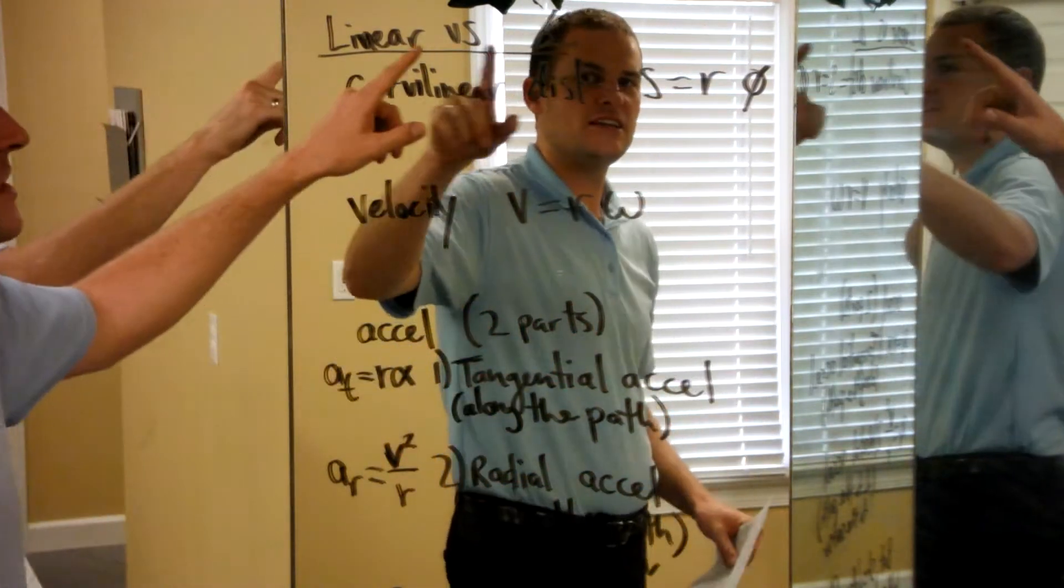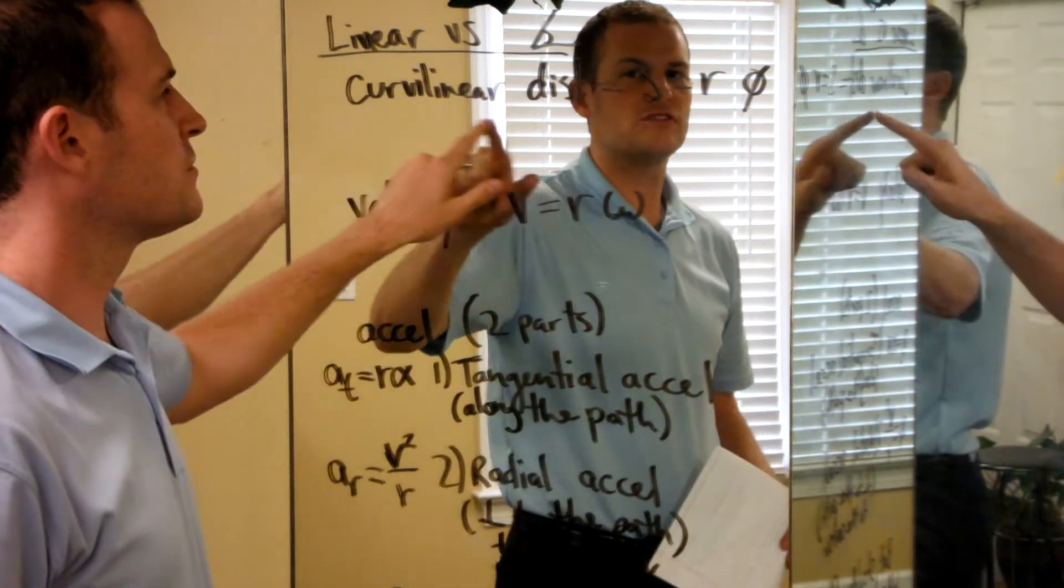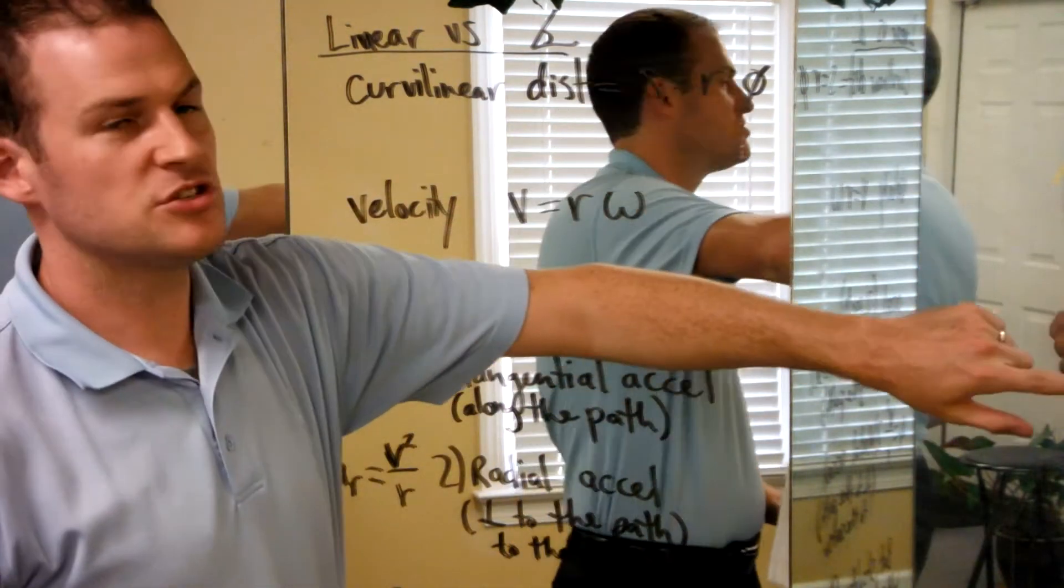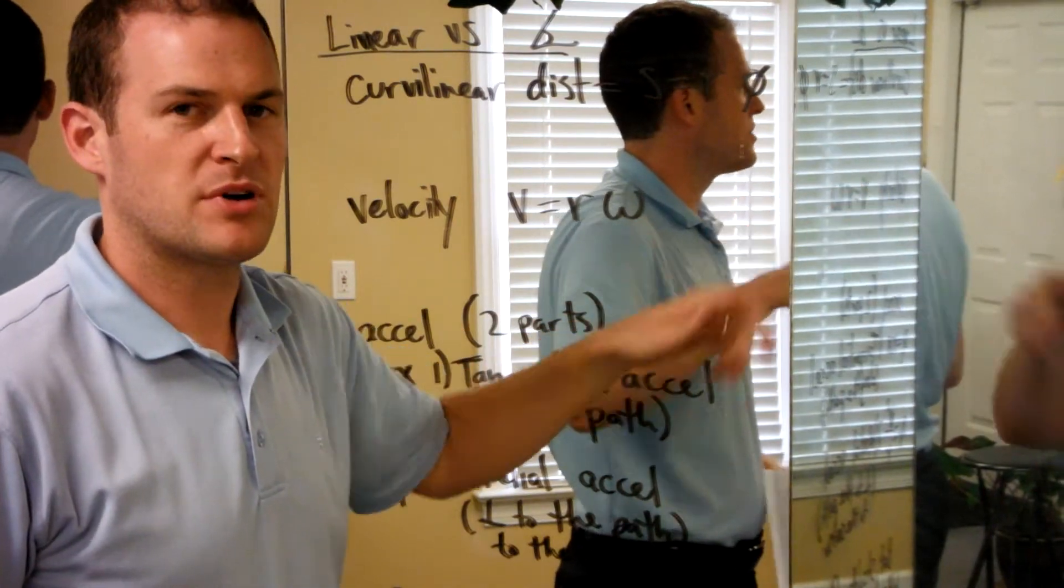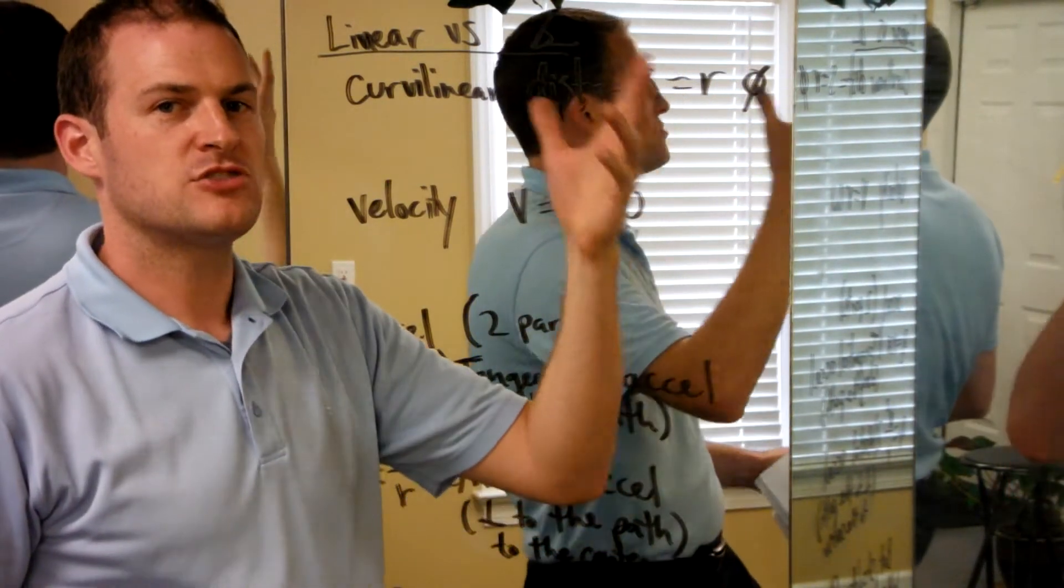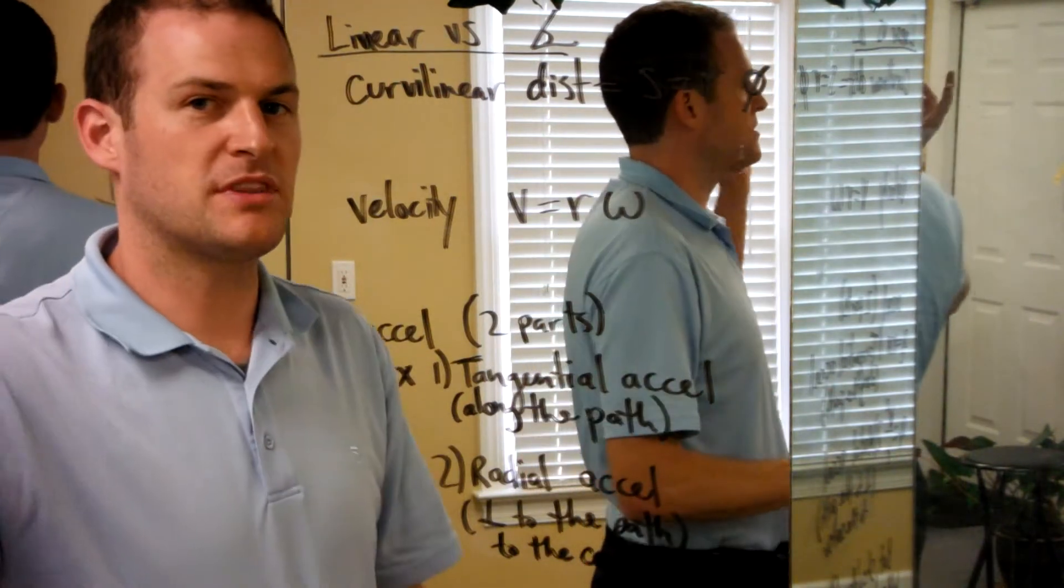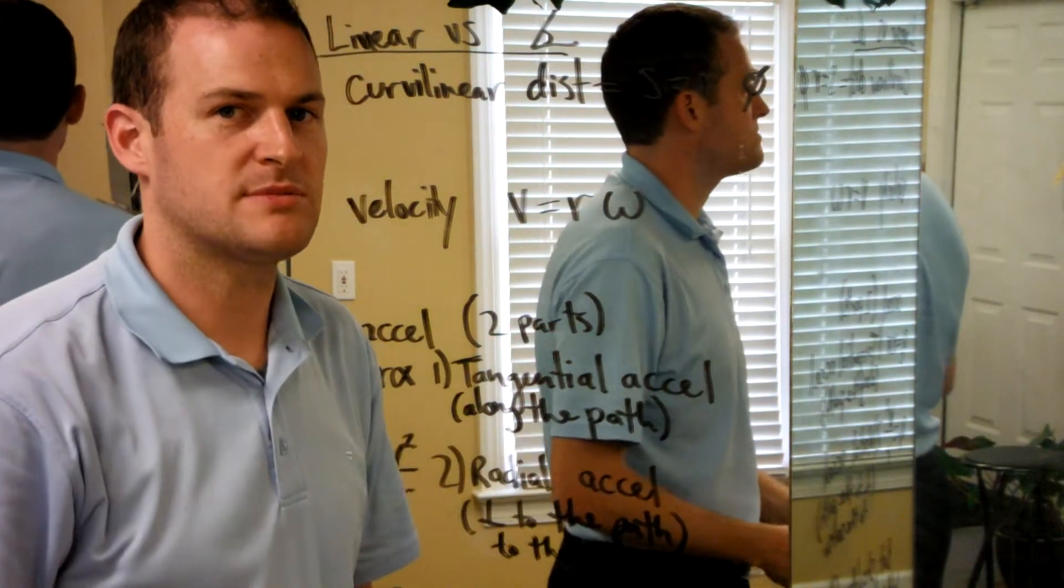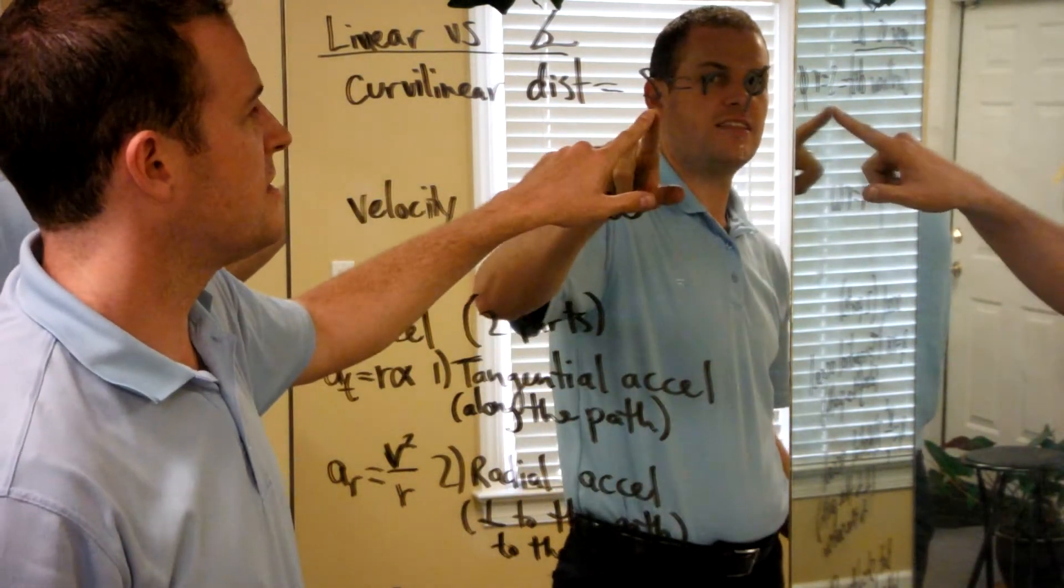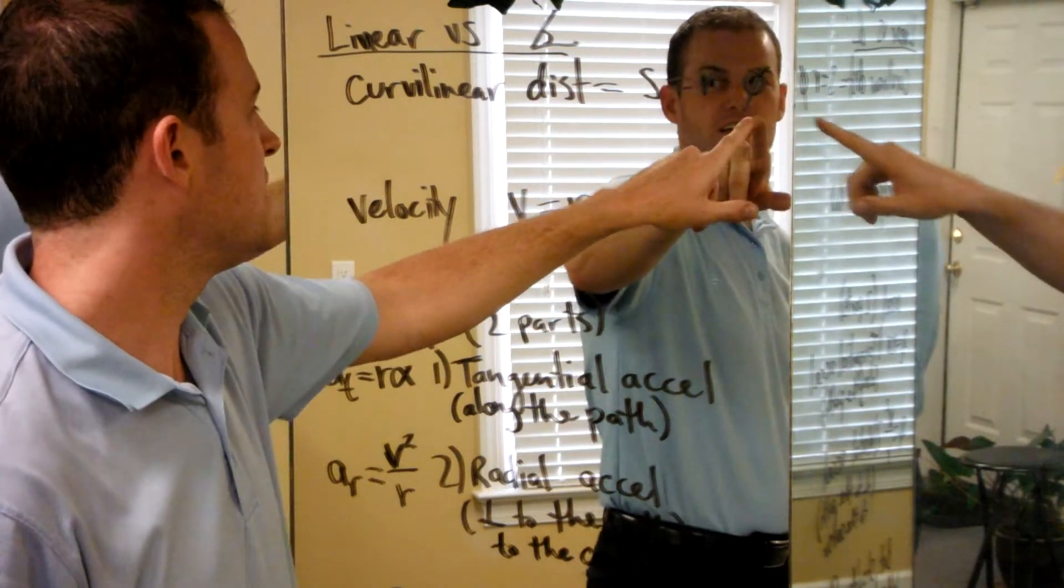When we're comparing linear versus angular motion, we can convert between them. We might talk about curvilinear distance, or the distance traveled by the tip of a bat as it moves through the air, perhaps the toes as they're traveling through a cartwheel or round-off. You might talk about the fingertips as they're traveling along an arc to release a baseball. That is the curvilinear distance. That is s, and that equals the radius times phi.